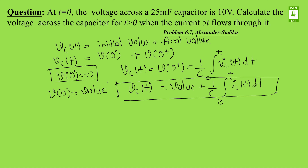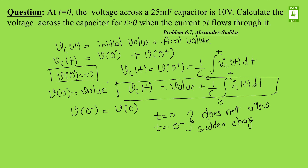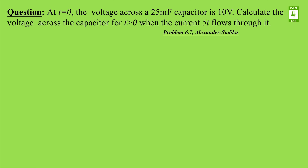To further extend the concept: if the initial value of the capacitor is given, then v(0⁻) equals v(0), because the capacitor does not allow a sudden change in voltage. If the question states the initial value of the capacitor is, for example, 20 volts, then 20 volts is your v(0⁻) or v(0). The initial value is carried at t = 0, but the steady state value may be different depending on the condition across the capacitor.